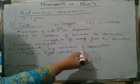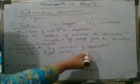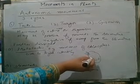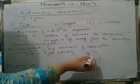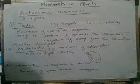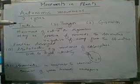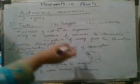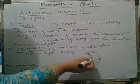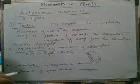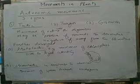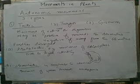When the light intensity is low, the chloroplasts move to positions where they can better capture light. The chloroplasts reposition themselves so they can fix carbon dioxide effectively in their work of photosynthesis.